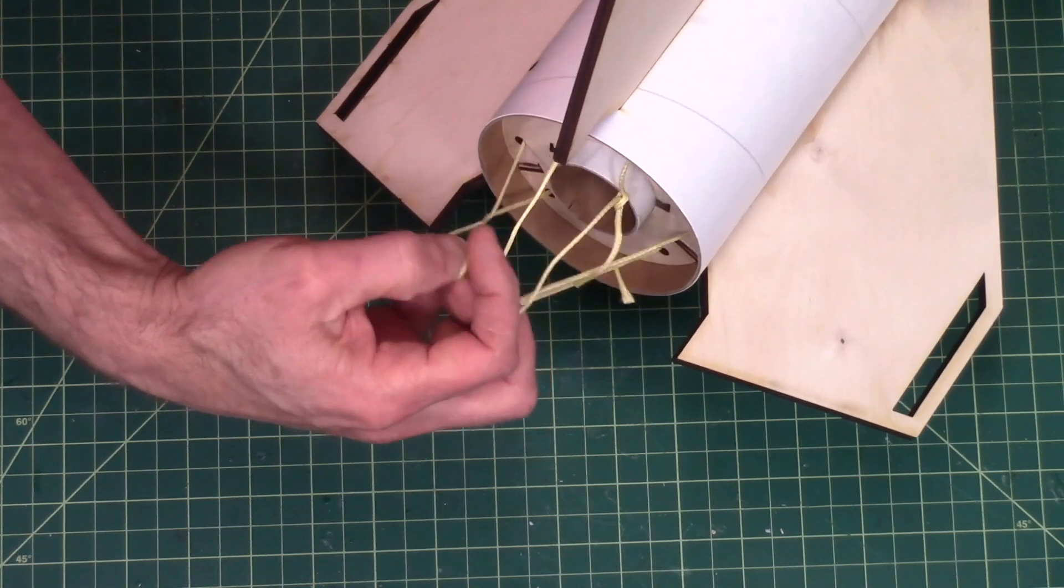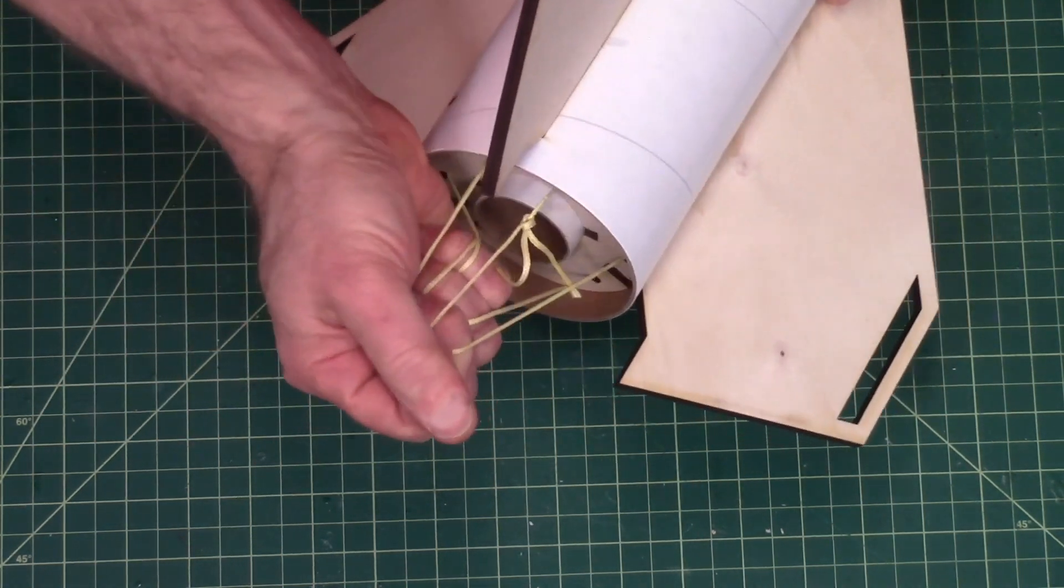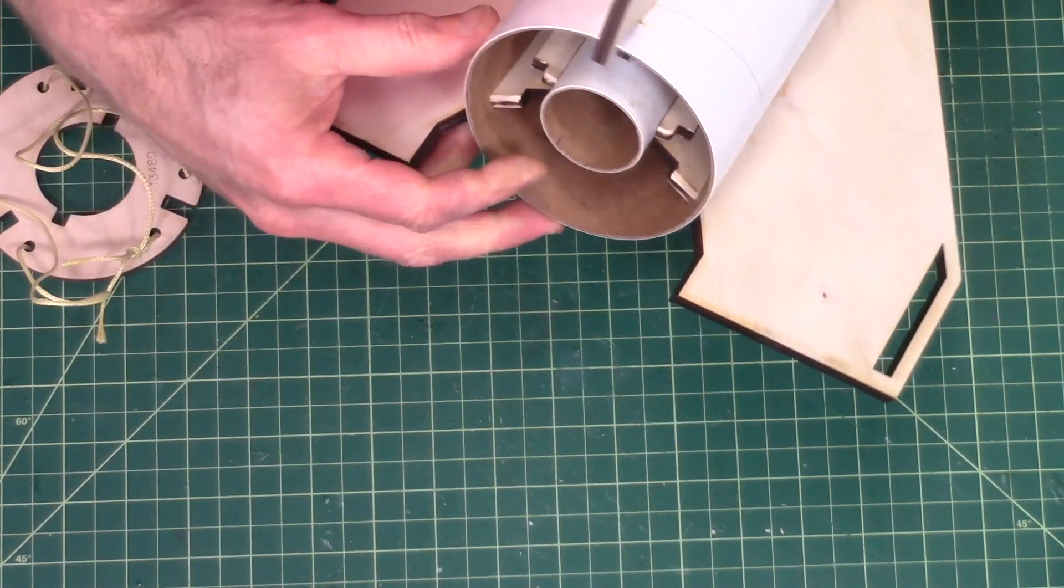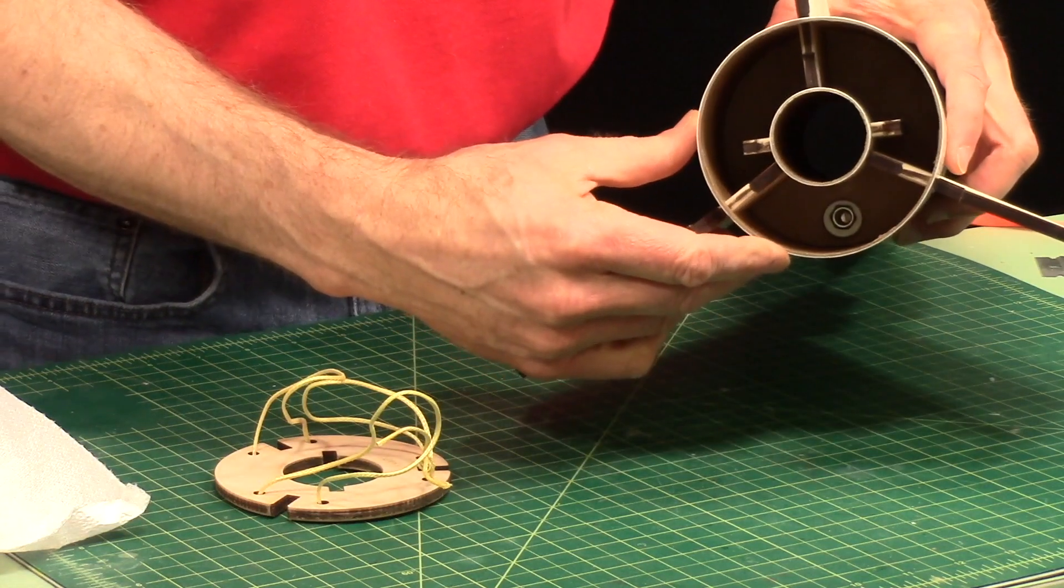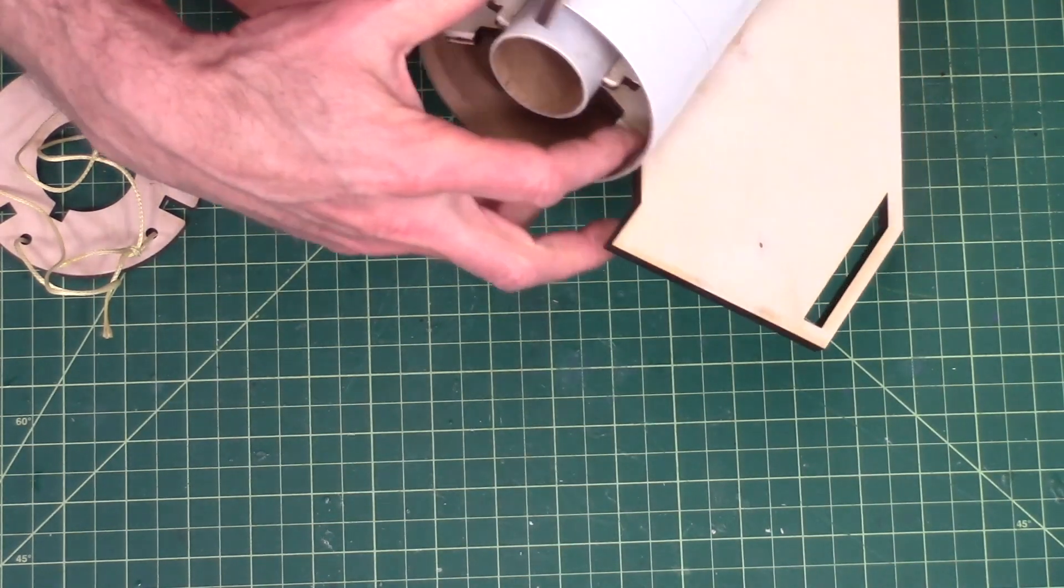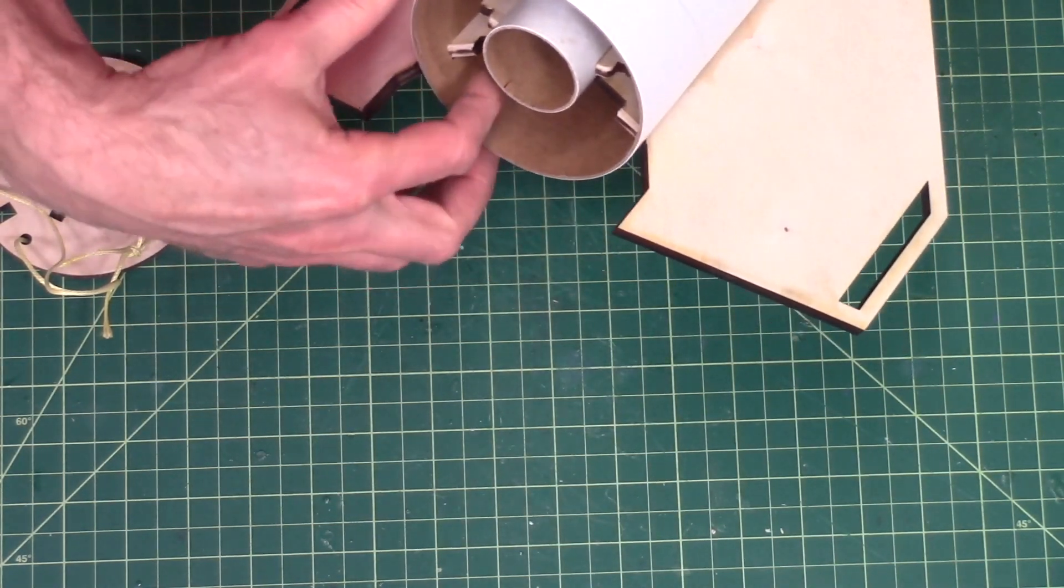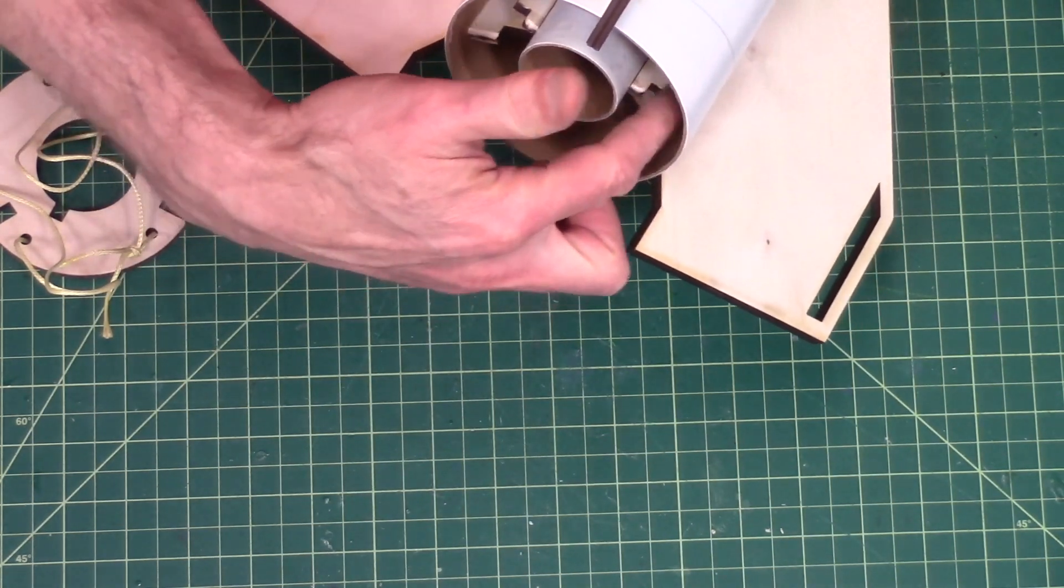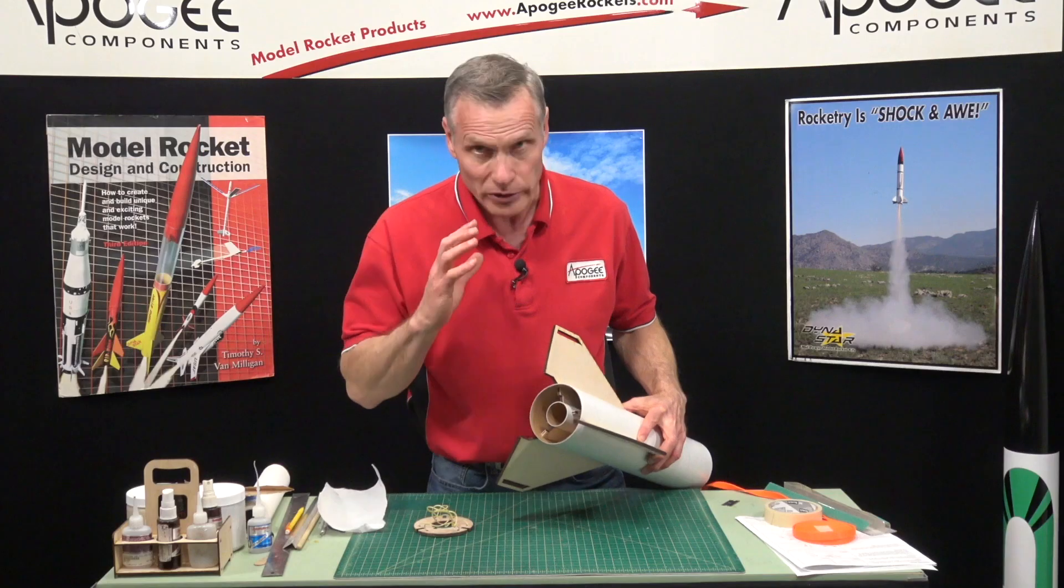So now I want to pull this back ring out. I'm going to use the Kevlar and wiggle back and forth to pull it out like that. And now we can see inside the rocket and this is where we're going to apply the epoxy.